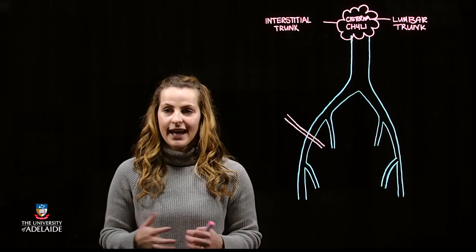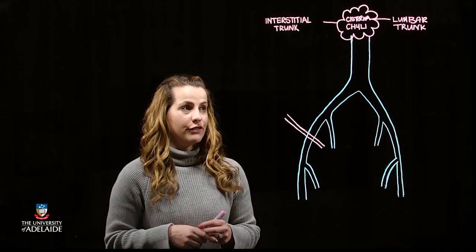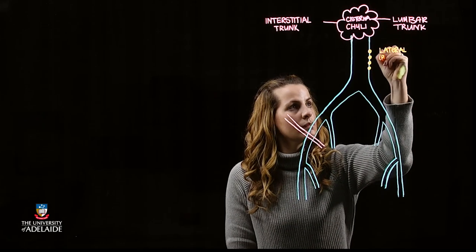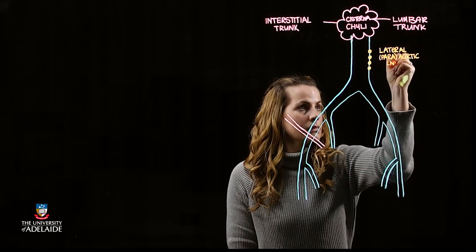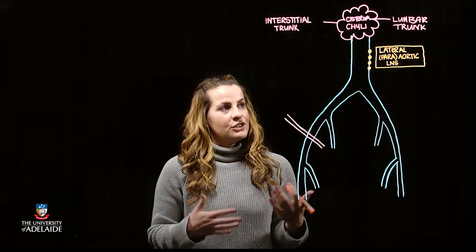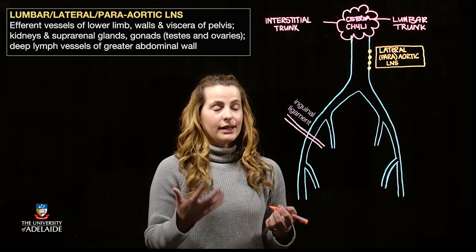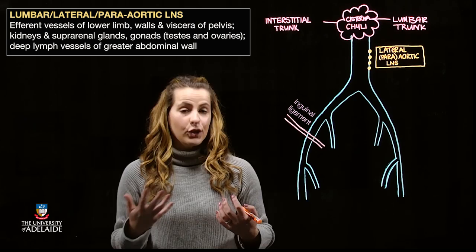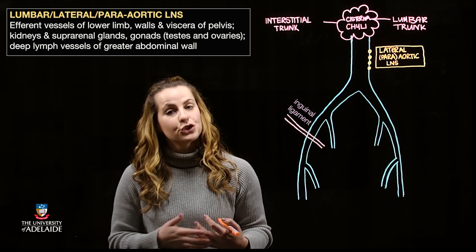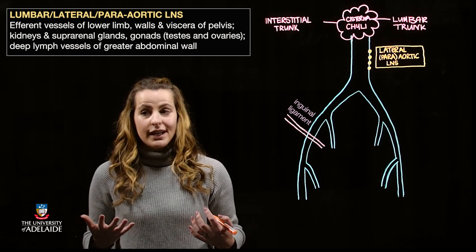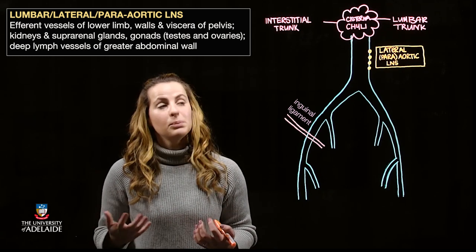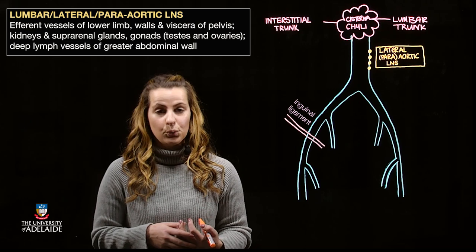The para-aortic lymph nodes are going to be located to the lateral aspects of the blood vessels. More specifically, the lumbar trunk is going to be draining the lower limb, the walls and viscera of the pelvis, the kidneys and suprarenal glands, the gonads — so the testes and the ovaries — as well as the deep lymphatic vessels associated with the abdomen.